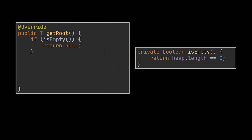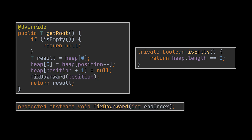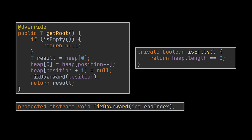Now let's move on to the get root or remove method. I started by checking if our heap is empty to avoid null pointer exceptions — if empty, we return null. Otherwise, we store the value of the root in a temporary result variable. Then we take the last element at the position index and place it at the root, decrementing the position attribute to simulate the deletion. We now have two similar items stored in the array, so we assign null to the last index to remove the redundant one. Finally, before returning the removed root element, we call the fix downward method — starting at the root and going down to the position index. The fix downward method is also abstract in the heap class as it has different implementations for the maximum and minimum heaps.